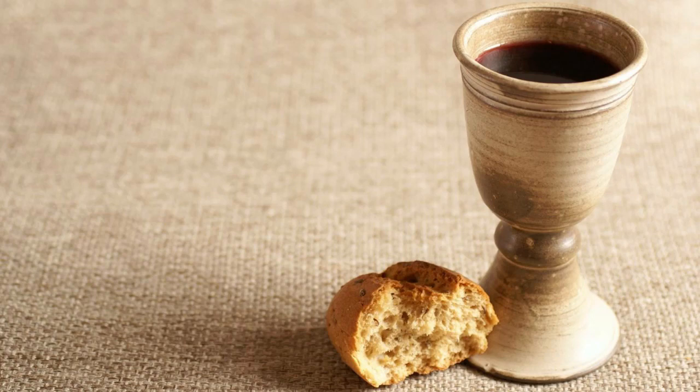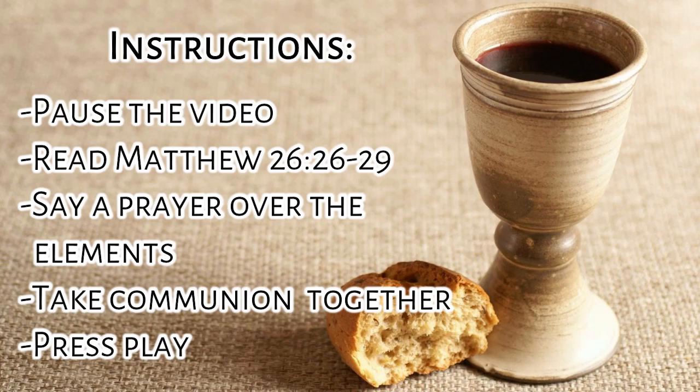Matthew and Mark tell us that it was after Jesus predicted Judas' betrayal, but while he was still at the table, that Jesus shared the first communion with his disciples. In the face of his own betrayal, the sinfulness, selfishness, and corruption of humanity at his own table, Jesus offered his disciples reconciliation to God and to each other through the sharing of a sacred meal. This meal reminds us that Christ gave his body and blood for us while we were still sinners and that he reconciles us to God and each other. At this time, we will observe communion at each table. Pause the video, have one person read Matthew 26:26-29, and have someone else pray for your table. Then have everyone share in the bread and the cup together.